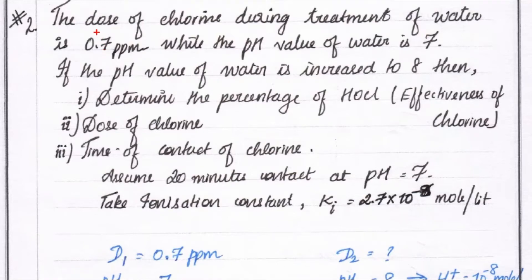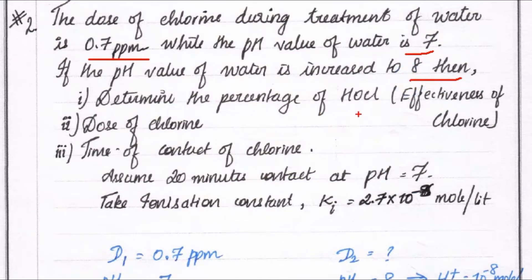Hello friends, today we are going to see the problem related to the effectiveness of chlorine. The problem is: the dosage of chlorine during treatment of water is 0.7 ppm. The pH value of water is 7. If the pH value is increased to 8, determine the percentage of HOCl (effectiveness of chlorine), the dosage of chlorine, and the time of contact of chlorine. Assume 20 minutes contact at pH 7, and ionization constant Ki = 2.7 × 10⁻⁸ mole per liter.